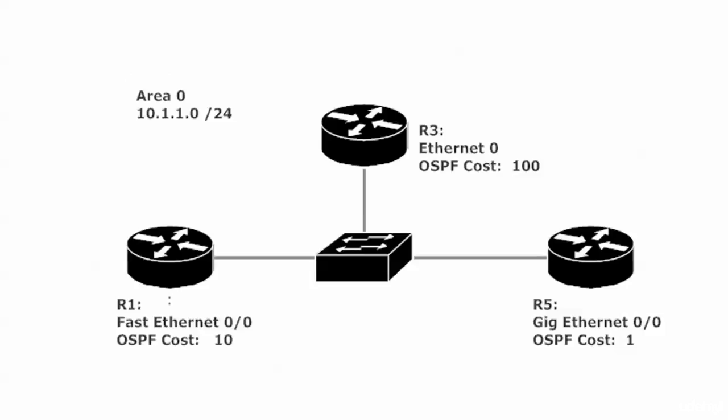Speaking off the record, you will run into situations — especially if you work for a service provider — where you won't want to apply auto-cost reference-bandwidth across all routers. You may just do it on your high-speed routers and leave everything else alone. But Cisco's recommendation is to keep it consistent, and you saw what happens when you don't. Now running the command on all three routers gives us: Ethernet cost of 100, FastEthernet (10x faster) cost of 10, and GigEthernet (fastest) cost of 1.